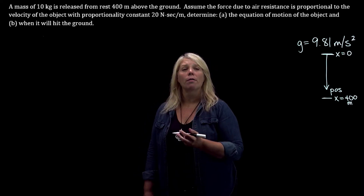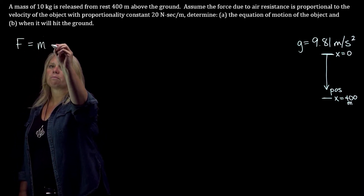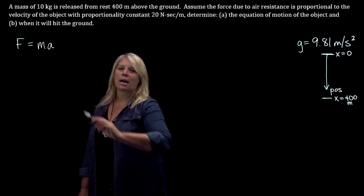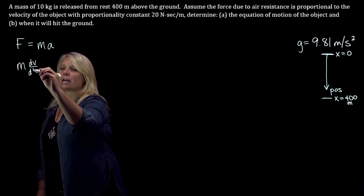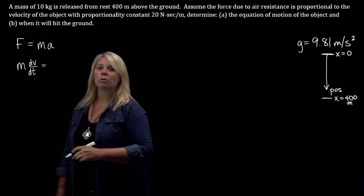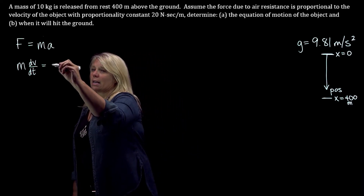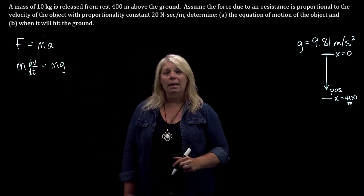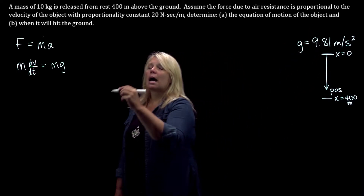We know that the basic model for the differential equation is force equals mass times acceleration. Acceleration is a rate of change, so we have mass times acceleration as the rate of change of velocity with respect to time. That equals all of the forces acting on our mass once it's released. We have the force due to gravity — m times g, that's mass times acceleration due to gravity. And then acting in the direction opposite motion, so in the negative direction, we have the air resistance.